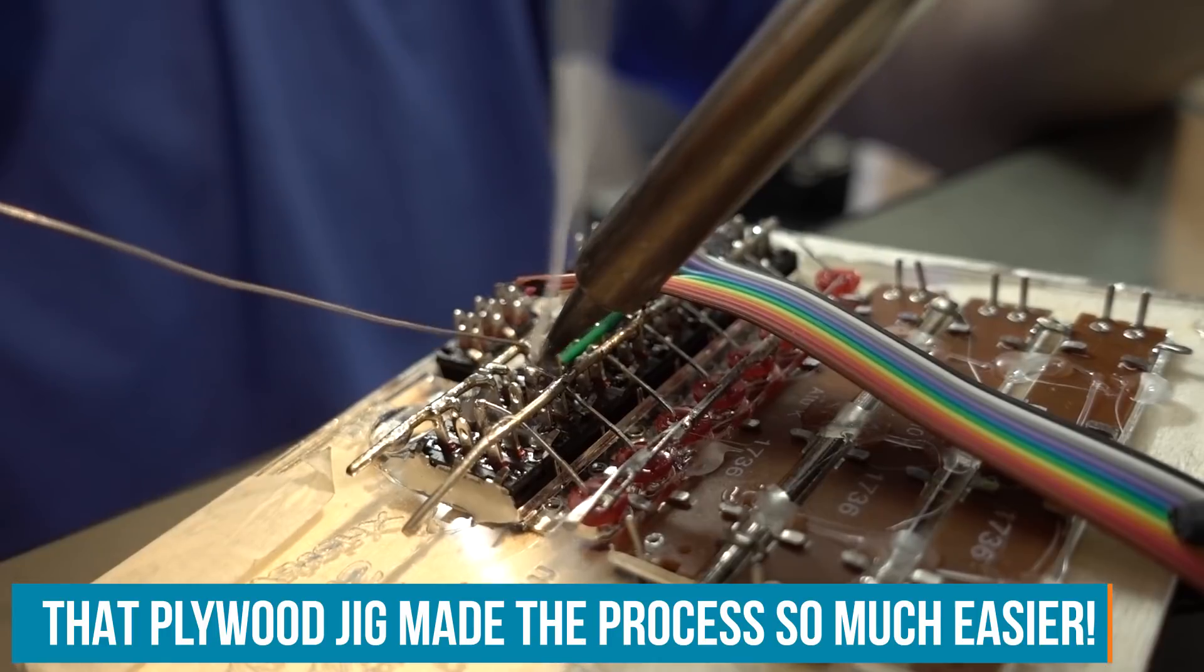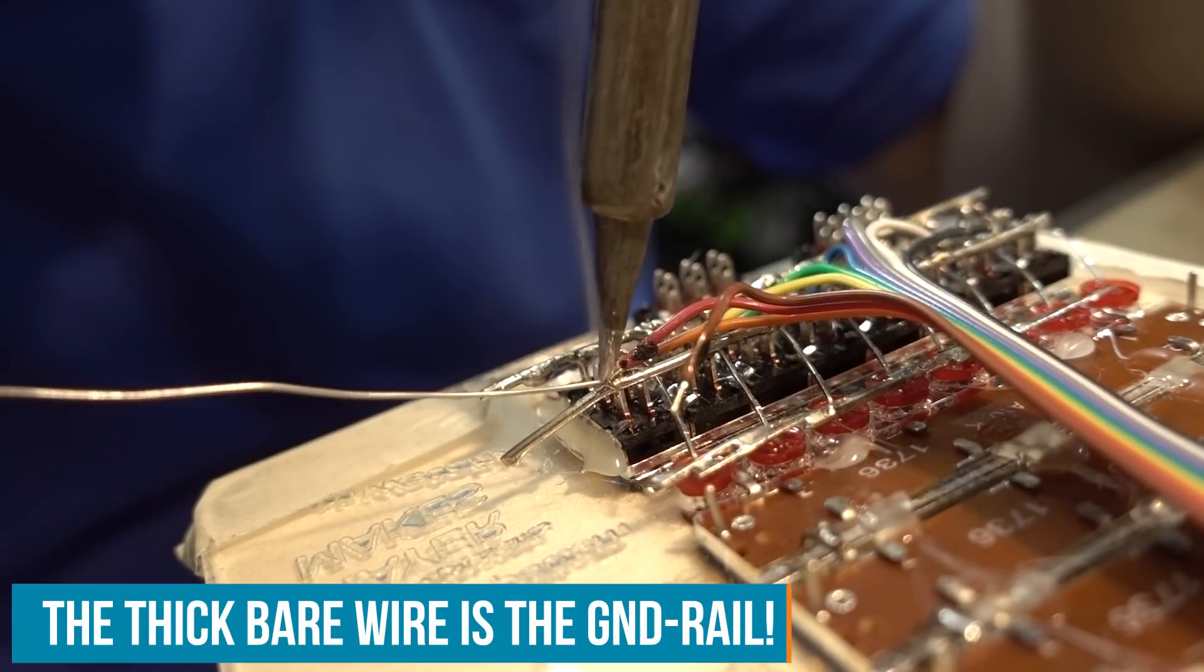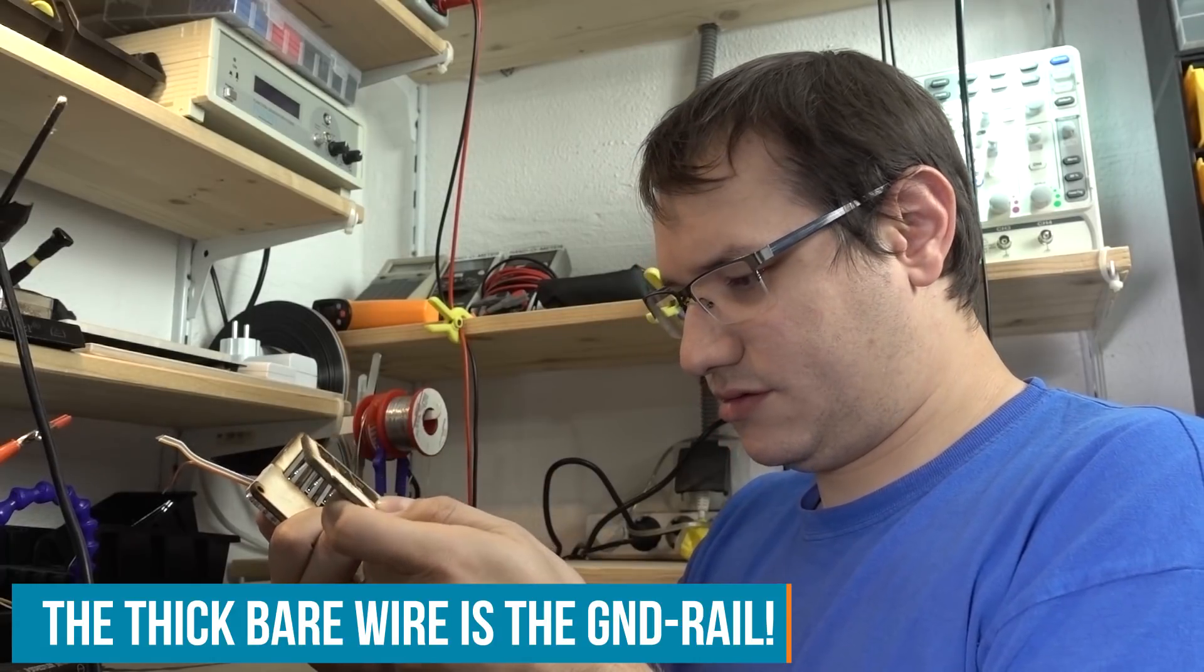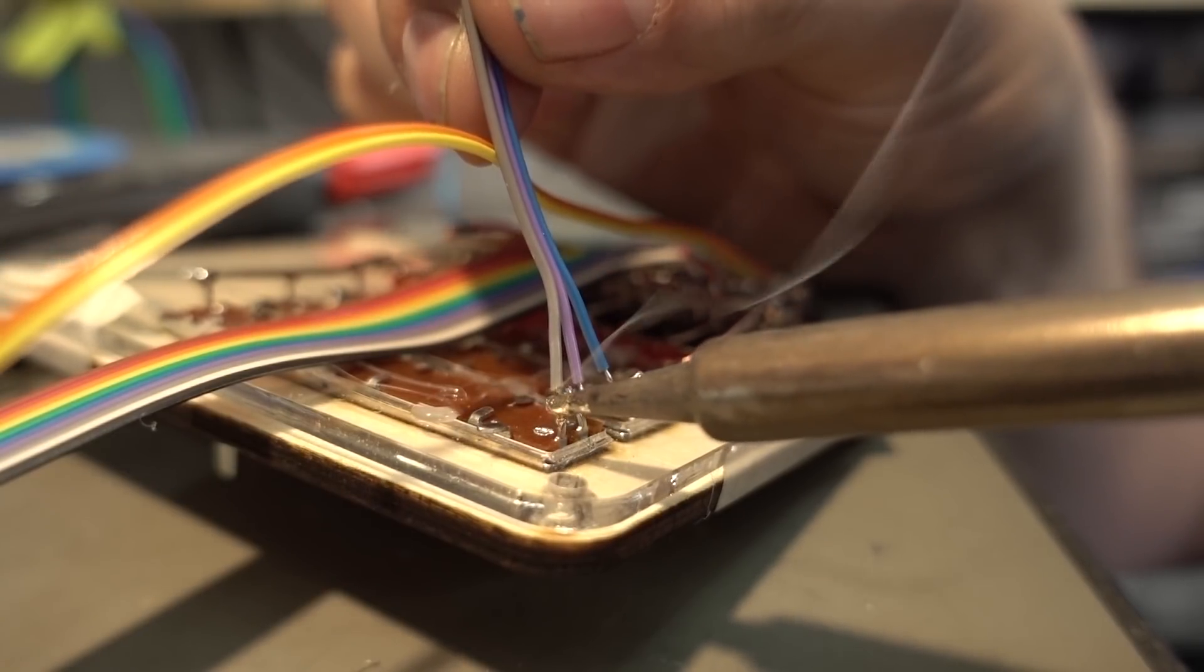The interface parts are sandwiched in between my wooden jig and the real plastic faceplate that was laser cut from PMMA. So I can conveniently hold them all in place and have it easier while soldering.